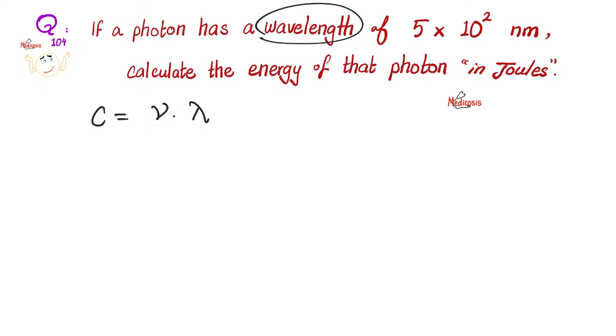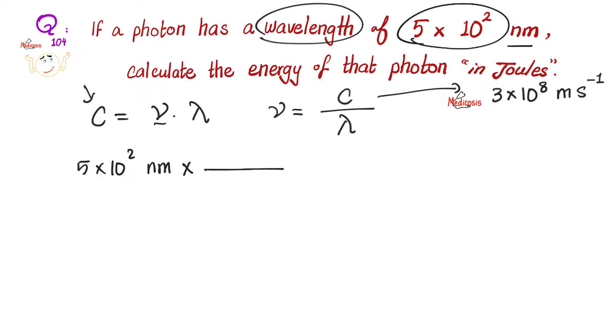C equals mu times lambda. What do I have here? I have the lambda. Do I have the mu? I do not have the mu. Do I have the C? Oh, it's the speed of light. It does not change. So let's solve for mu. The frequency of the wave equals C over lambda. I know the speed of light. It's about 3 times 10 raised to the eighth power meters per second. And I have the wavelength, but it's in nanometers. Oh, I need to convert this number into meters.